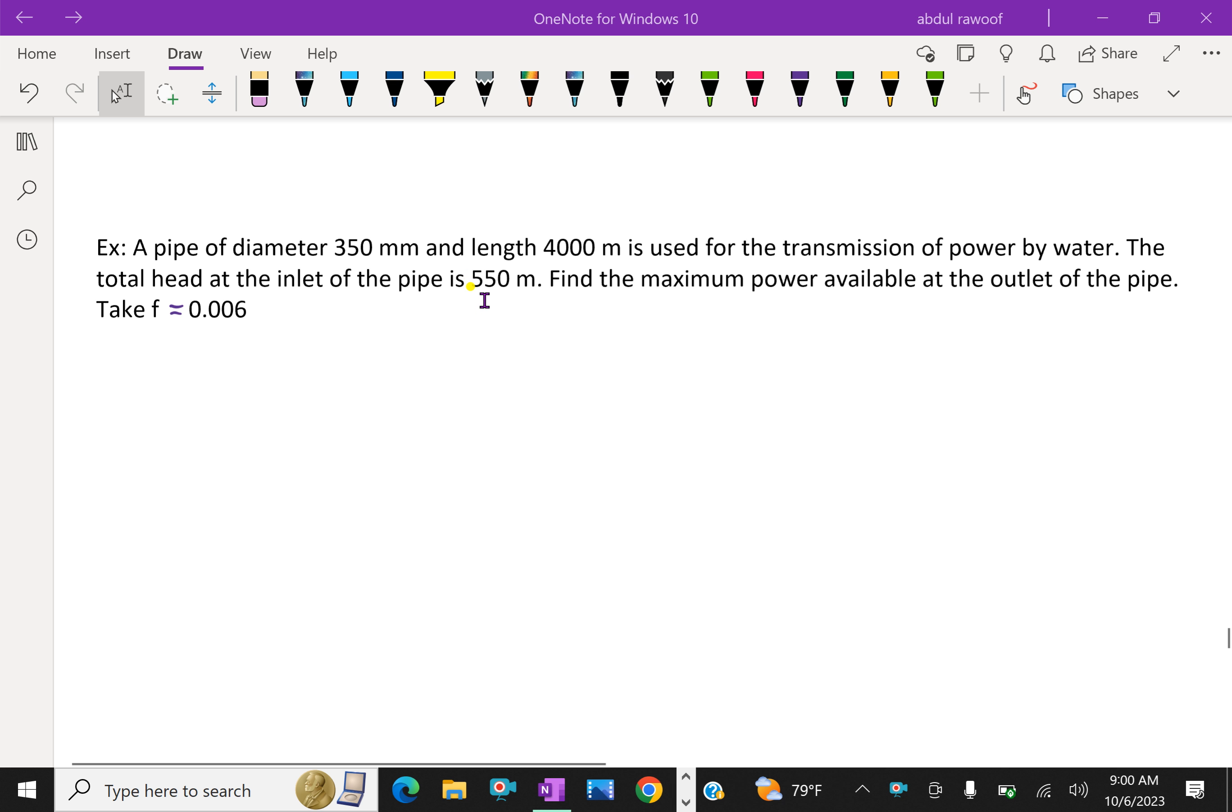A pipe of diameter 350 mm and length 4000 meter is used for transmission of power by water. The total head at the inlet of the pipe is 550 meter. Find the maximum power available at the outlet of the pipe if f equal 0.006.